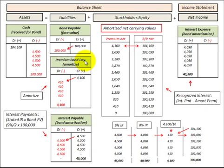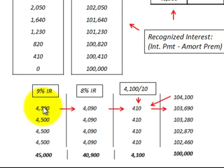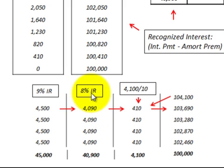Remember, this premium to bonds payable is a reduction to our interest expense that we recognize each period. It's also a balancing entry between the cash account and the bonds payable, and also a balancing entry between the interest payable and our interest expense. We have that $4,500 payment that we make to the bondholders each period — 9%, or 4.5% per period, times the $100,000 face value. Now we need to calculate the interest expense recognized each period, based on the 8% market rate.